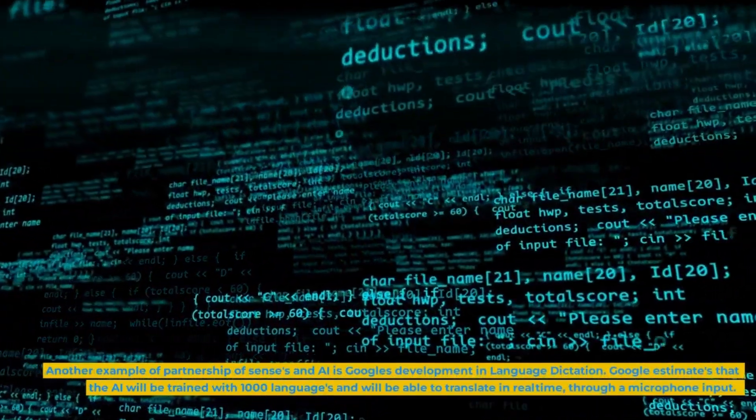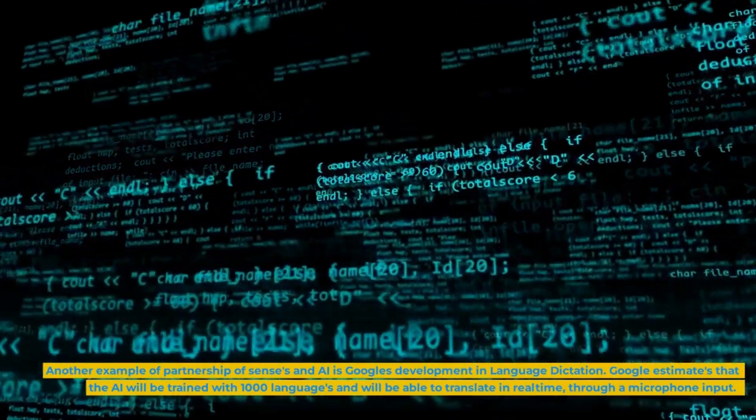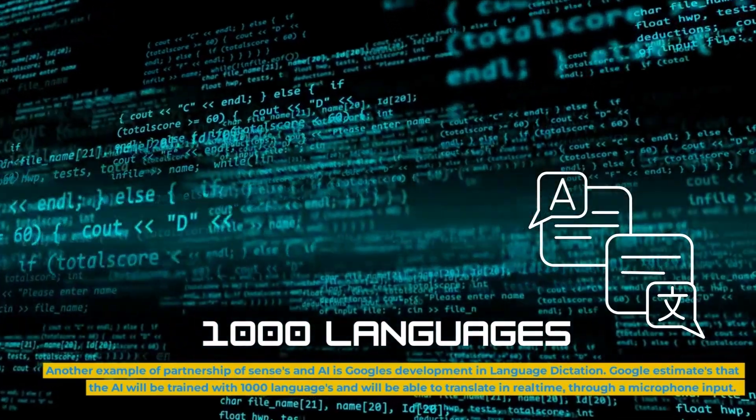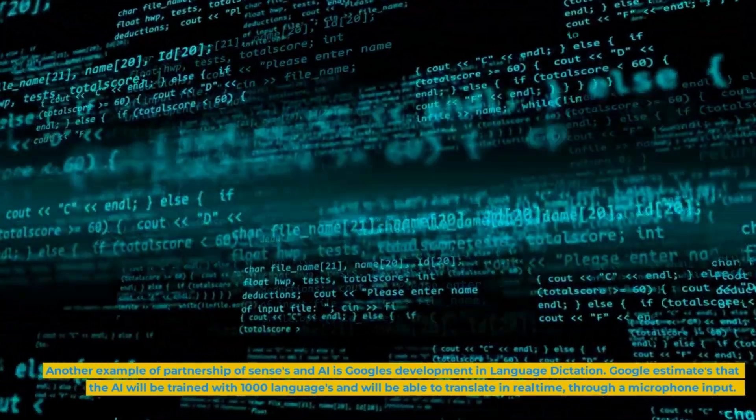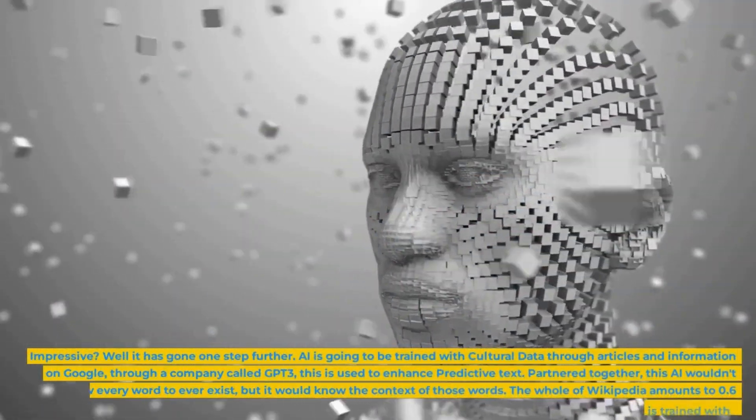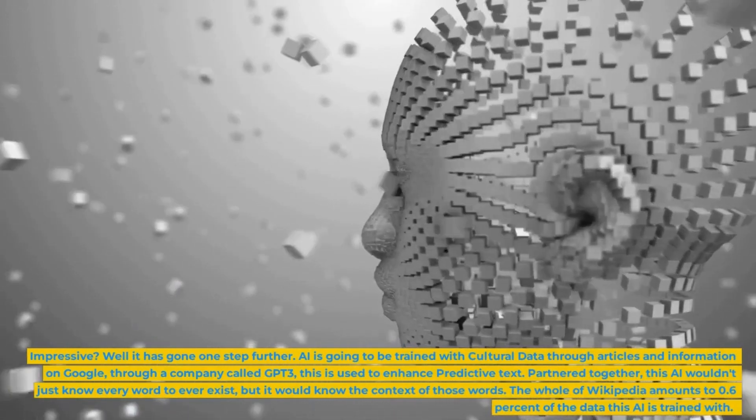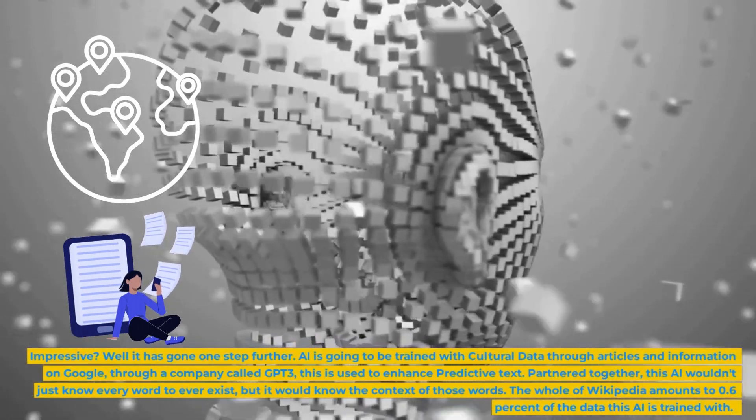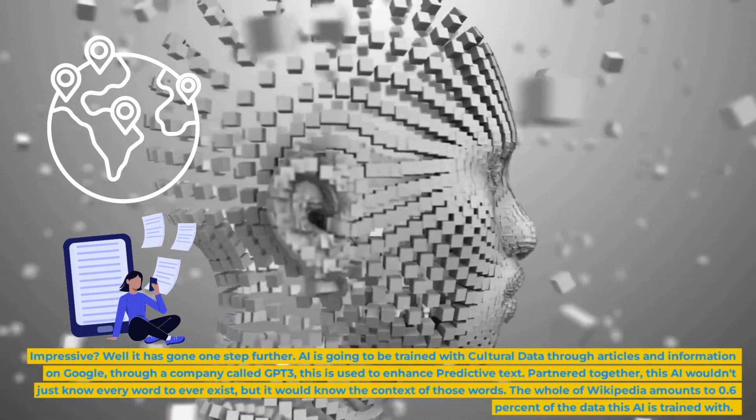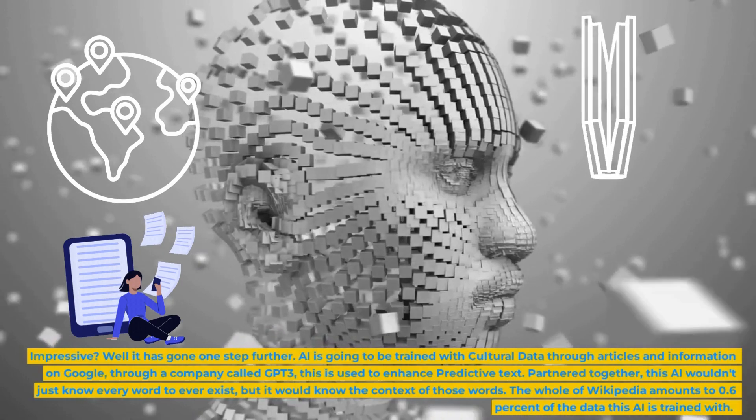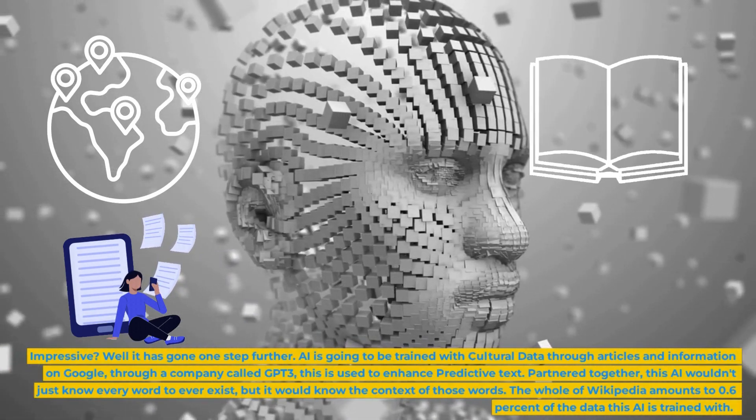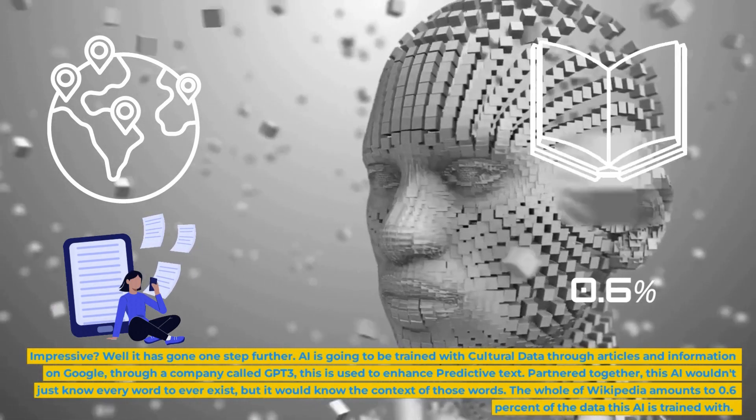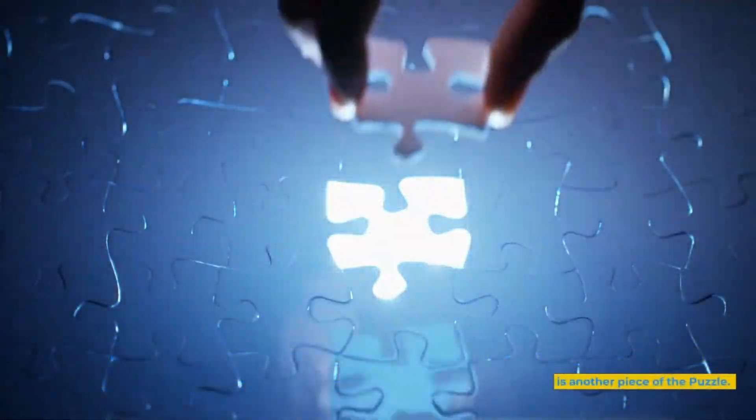Another example of partnership of senses in AI is Google's development in language dictation. Google estimates that the AI will be trained with 1000 languages and will be able to translate in real time through a microphone input. Impressive? Well it has gone one step further. AI is going to be trained with cultural data through articles and information on Google through a company called GPT-3. This is used to enhance predictive text. Partnered together, this AI wouldn't just know every word to ever exist, but it would know the context of those words. The whole of Wikipedia amounts to 0.6% of the data this AI is trained with. This is another piece of the puzzle.